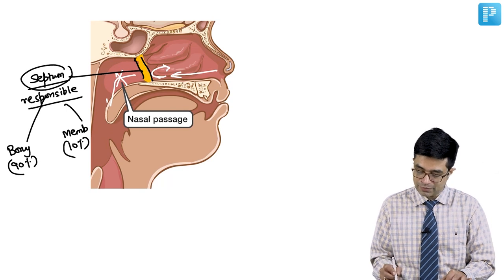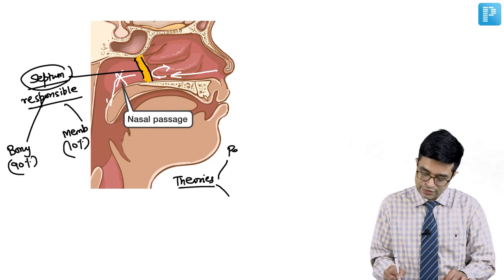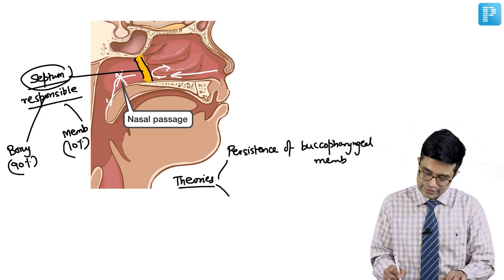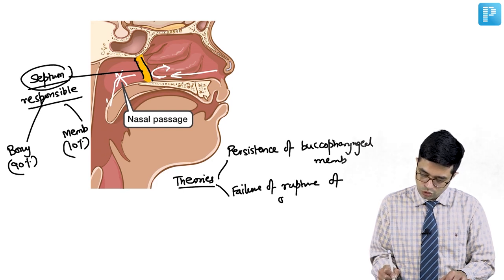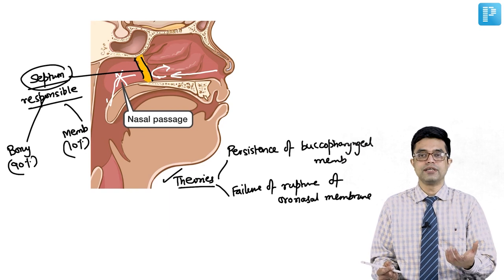There are two theories explaining why this septum forms. The first theory states that there is persistence of the buccopharyngeal membrane, which normally disappears but instead persists, causing choanal atresia. The second theory states there is failure of rupture of the oronasal membrane.